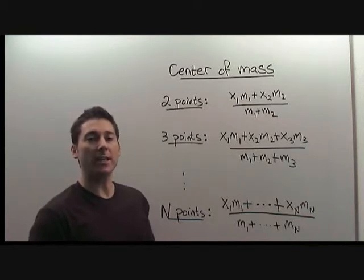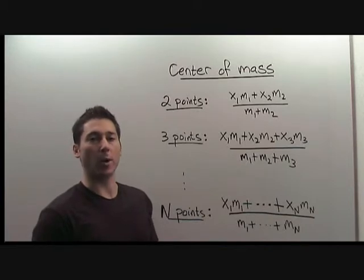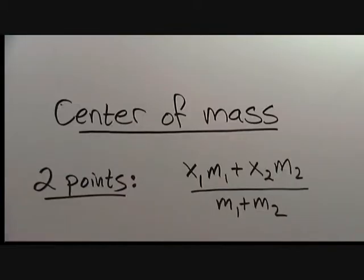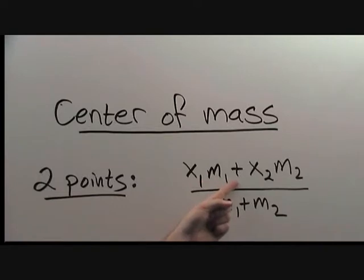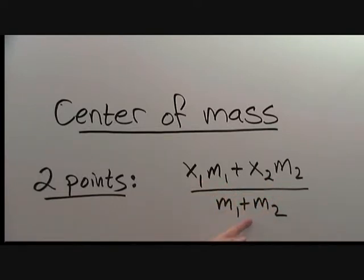All we really need to understand is what is the center of mass for individual points. For masses lined up on a line, the center of mass is always the weighted average of their position divided by the total mass. For two points, that weighted average is the first location times the first mass, plus the second location times the second mass, all divided by the total mass.